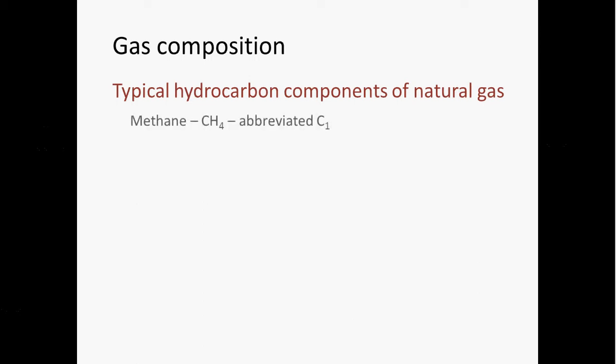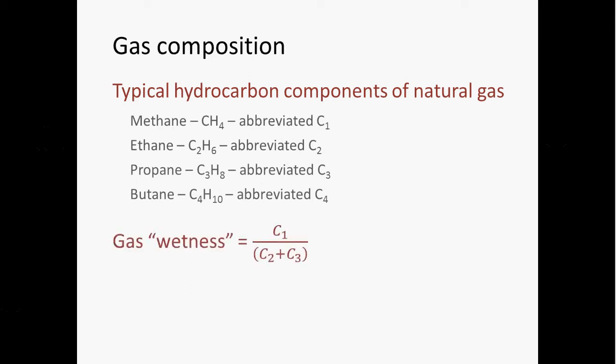The typical hydrocarbon components of natural gas are methane, ethane, propane, and butane. Of these, methane is typically the most abundant. It's the primary component of natural gas. Gas composition is often discussed in terms of gas wetness, which is calculated as shown here. The percentage of gas that is composed of methane is divided by the sum of the percentage that is composed of ethane and propane, C2 and C3. Gas that has a higher abundance of these higher chain gases, hydrocarbon gases, ethane, propane, butane, is referred to as wet gas because those compounds condense out of the gas more easily than methane.